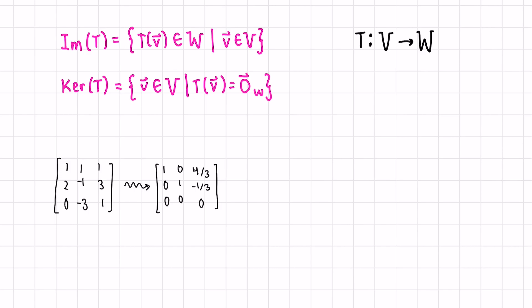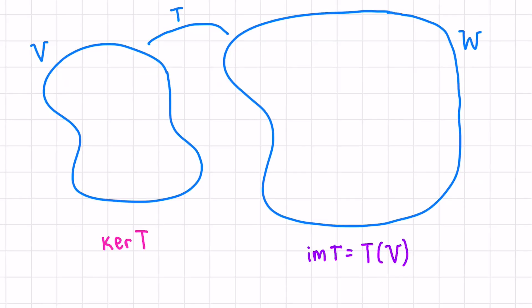When we're talking about linear transformations from one finite dimensional space V to another finite dimensional space W, two spaces arise: the image and the kernel of the transformation, both of which are subspaces. To visualize, I drew this little diagram.